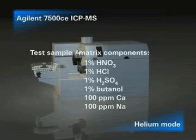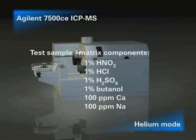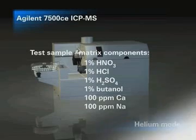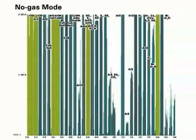To illustrate the interference removal power of the helium mode, a very challenging sample matrix containing these components was analyzed. Spectra were obtained for the mid-mass range where most polyatomic interferences occur. This spectrum shows the matrix interferences that occur in normal ICP-MS. This spectrum was acquired in normal mode — that is, with no gas added to the cell. Almost every analyte in this mass range suffers severe polyatomic overlaps, making quantification impossible at trace levels.